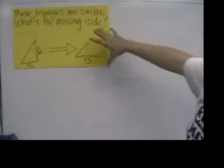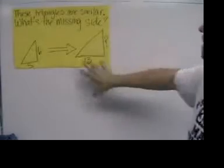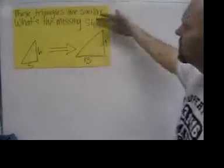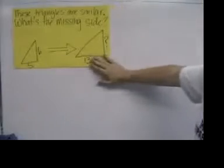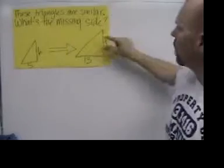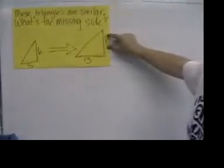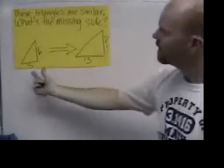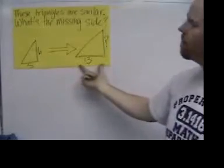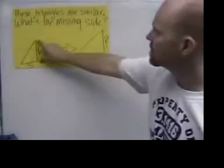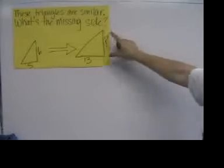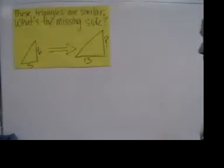In this lesson, we're going to use proportions to answer this question. The question is asking: we've got these two similar triangles, and we want to know what is the length of this missing side. This base is 5, this base is 13, this height is 6. We don't know the height of this triangle and we'd like to find that out.